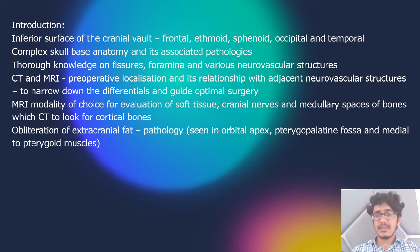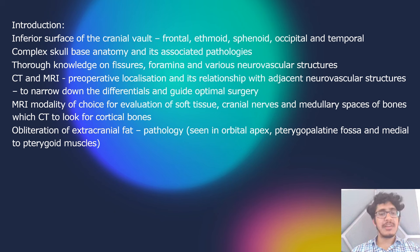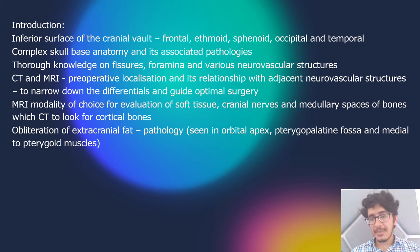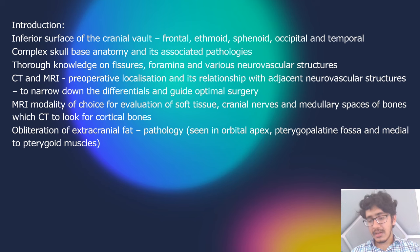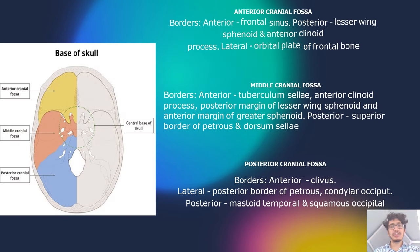In MRI, we should take T1 non-fat-sat sequences, as extracranial fat is better appreciated in regions such as the orbital apex, pterygopalatine fossa, and the area medial to the pterygoid muscle. These fat planes get obliterated in infection, inflammation, and tumor pathologies.